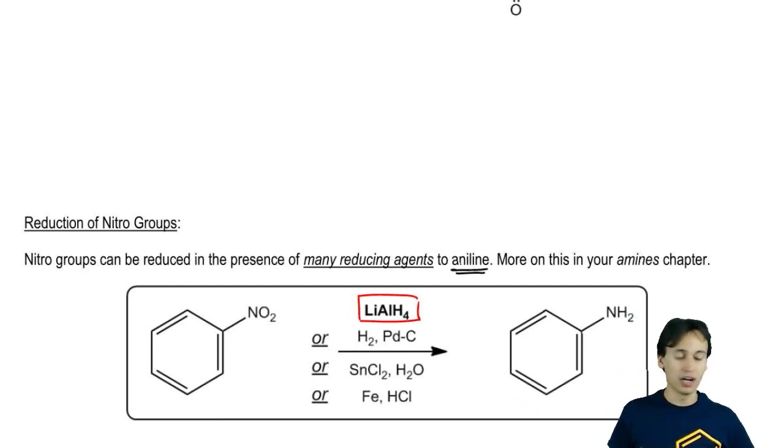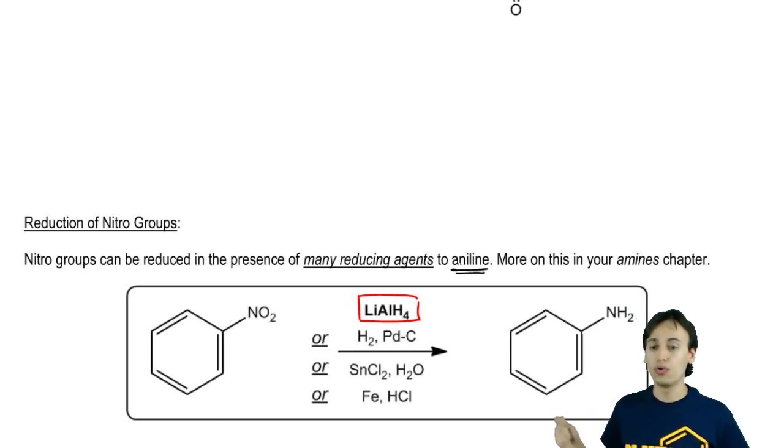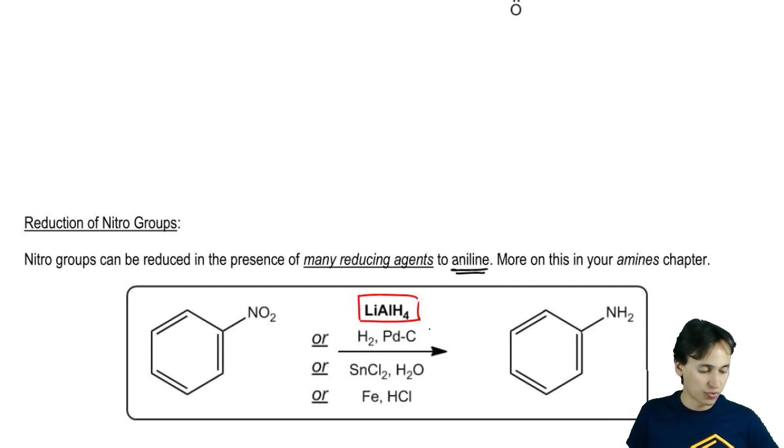But there are a few other types of reagents that can do the same thing that you might see. Do you recognize H2 and a palladium catalyst? This also goes for a nickel or platinum catalyst. These would be the reagents used in catalytic hydrogenation.